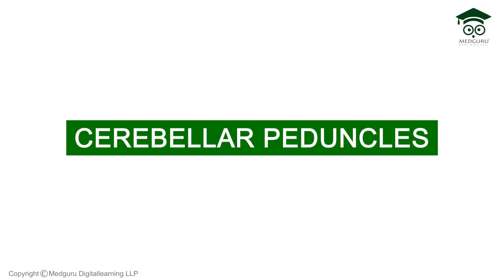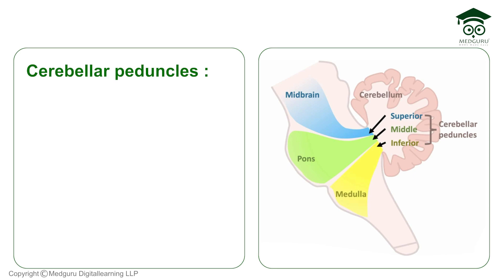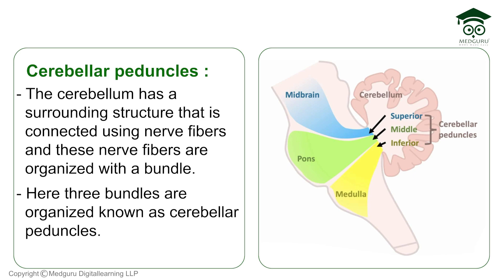In this video, we'll talk about cerebellar peduncles. The cerebellum is connected to its surrounding structures using nerve fibers, and these nerve fibers are organized in bundles. They are organized in three main bundles, and these three main bundles we call cerebellar peduncles.